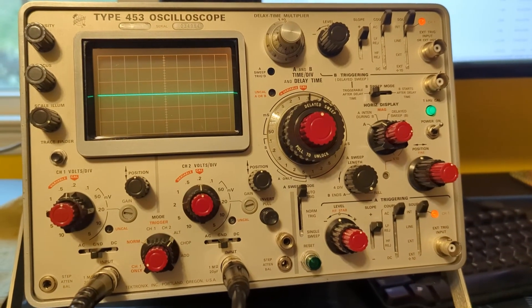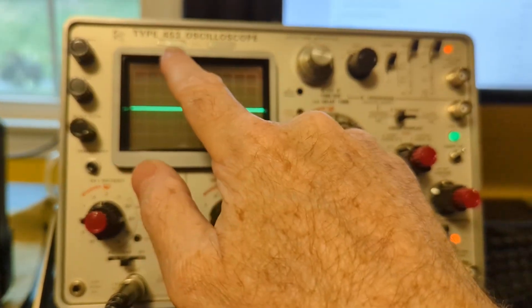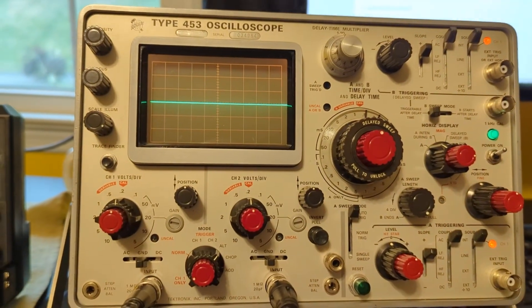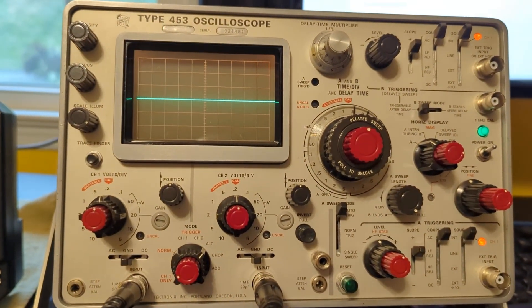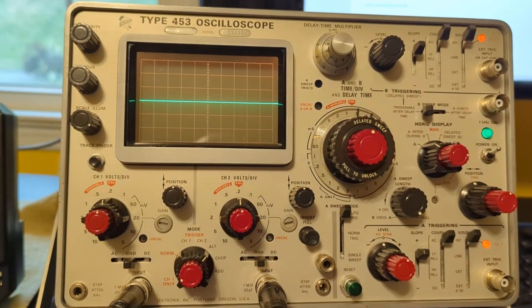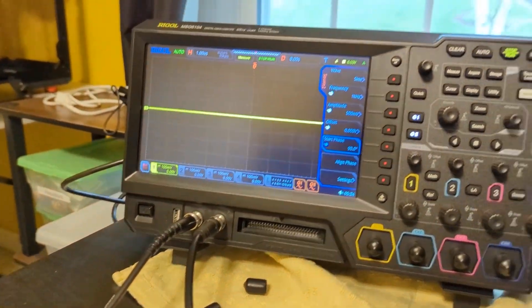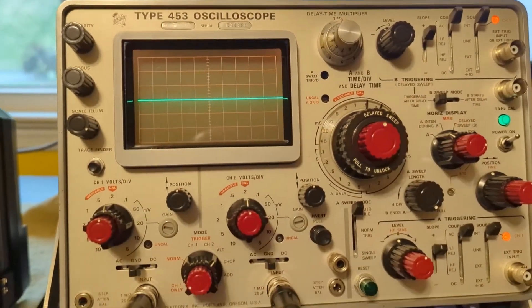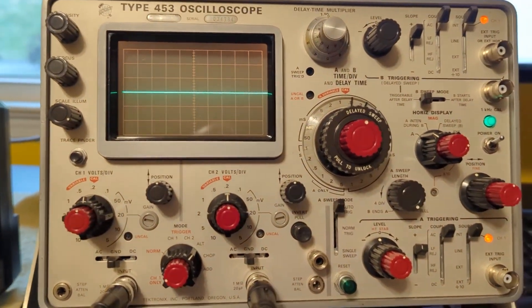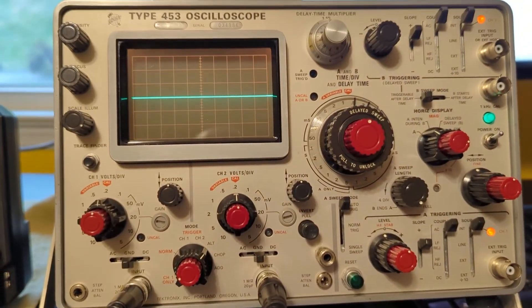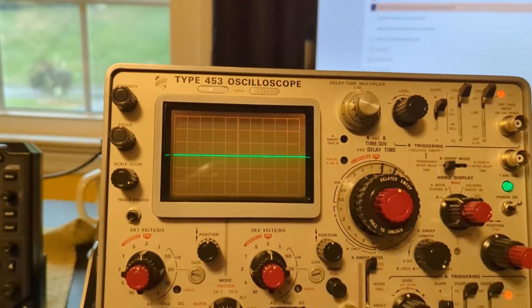Alright, this is a quick video to show how to do XY mode on a 453 oscilloscope. This took me a while to figure out even with the documentation, so I figured I'd show this off. So I've got two waveforms coming out of my Rigol that are 90 degrees out of phase, so we can see them on ground.